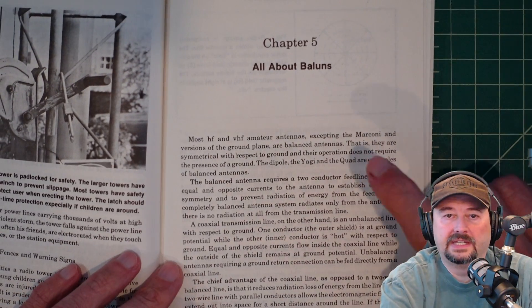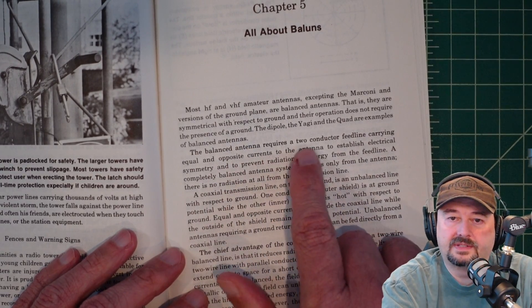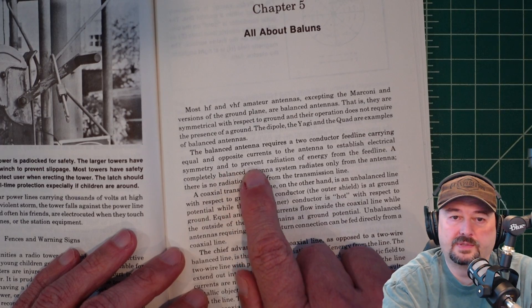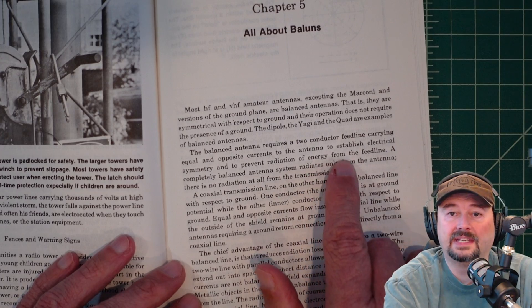So chapter 5 is all about balance. And so I wanted to just mention the second paragraph. It says, balanced antenna requires two conductor feed lines carrying equal and opposing currents to the antenna to establish electrical symmetry and prevent radiation of energy from the feed line.